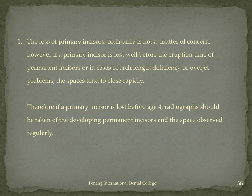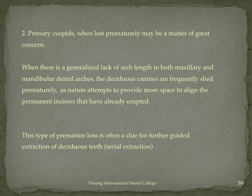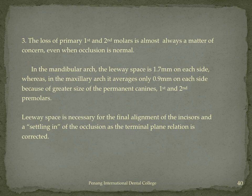If a primary incisor is lost before the age of four, radiographs should be taken of the developing permanent incisor and the space should be observed regularly to assess whether a space maintainer is needed to avoid subsequent malocclusion. Premature loss of primary canines is a very important matter of concern — it is generally a sign of severe arch length–tooth material discrepancy and that severe crowding is about to happen. As an adaptive mechanism, the primary canines shed prematurely so that already erupted permanent incisors can align themselves, pointing towards an interceptive procedure: serial extraction.